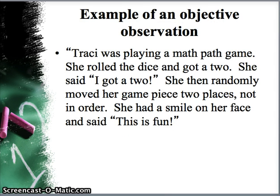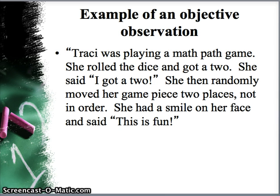Let's look at Tracy playing the math game written objectively: 'Tracy was playing a math path game. She rolled the dice and got two. She said, I got two. She then randomly moved her game pieces two places, not in order. She had a smile on her face and said, this is fun.' This gives us specific information — she identified the number two on the dice and moved two spaces, and instead of saying she had a good time, we document she had a smile on her face and said 'this is fun.' Those are observable behaviors we can document accurately.